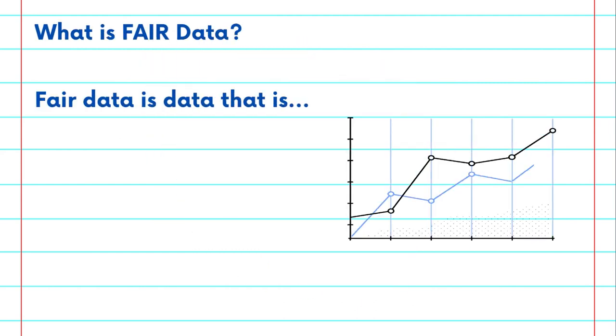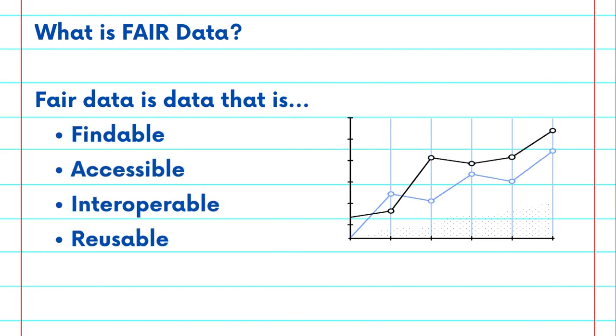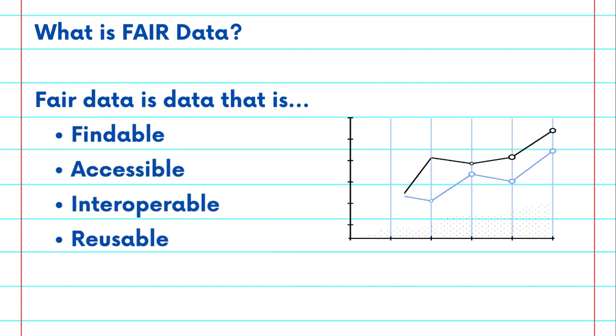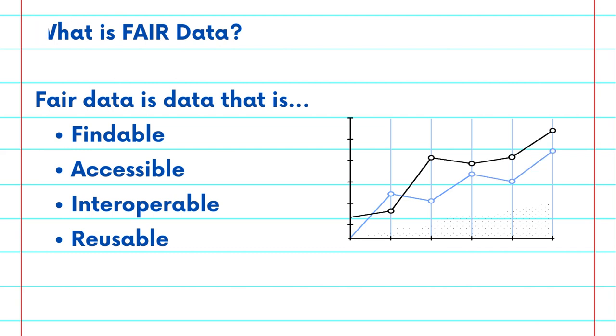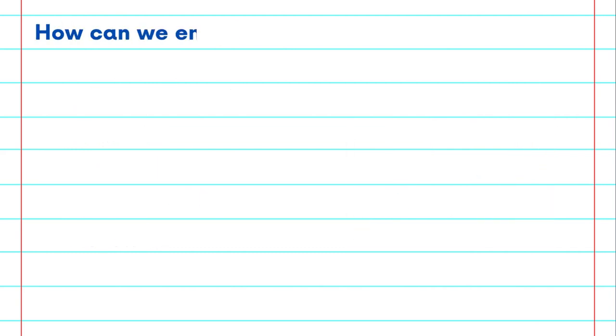FAIR data is data that is findable, accessible, interoperable, and reusable. How can we ensure the use of FAIR data?